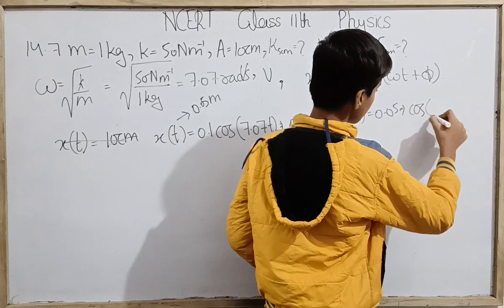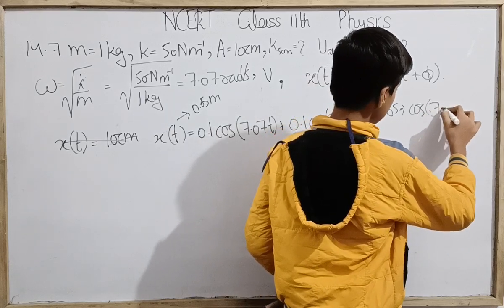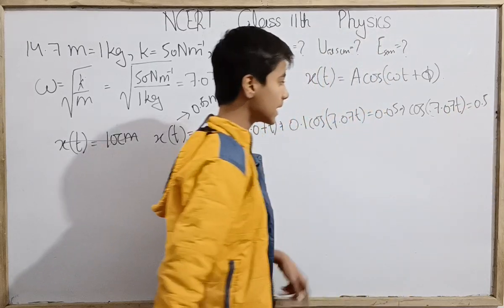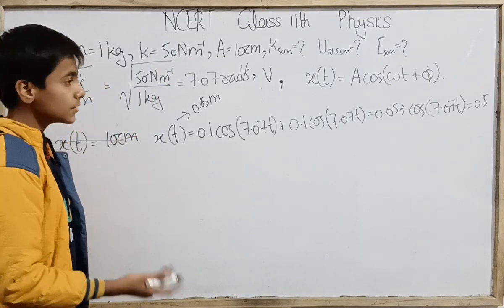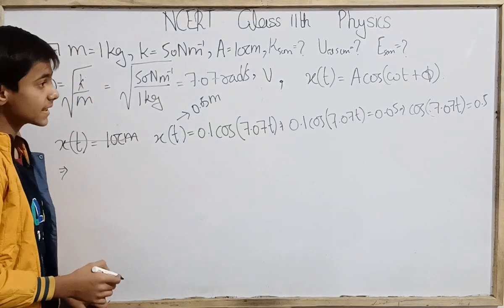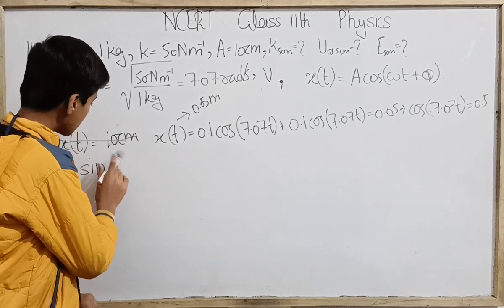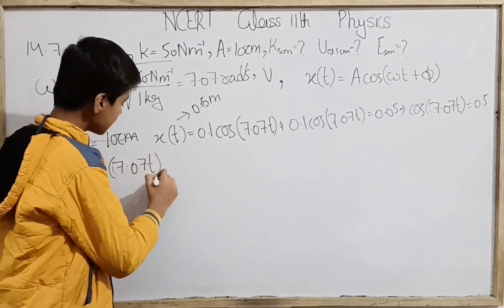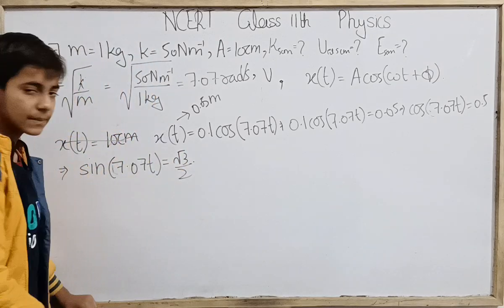Therefore cos(7.07t) equals 0.5, that is 1 by 2. Cos of this angle is 1 by 2, so that really holds for 60 degree. Cos 60 degree is 1 half. Therefore sine of 7.07t equals root 3 by 2. That is, sine we have found.